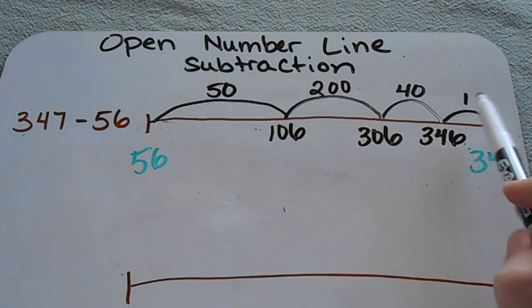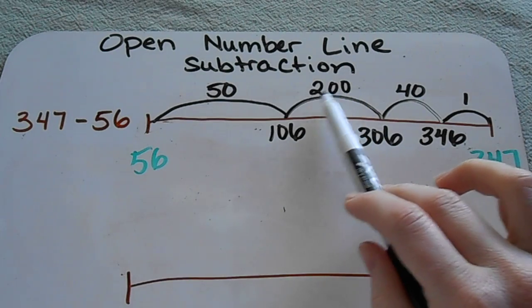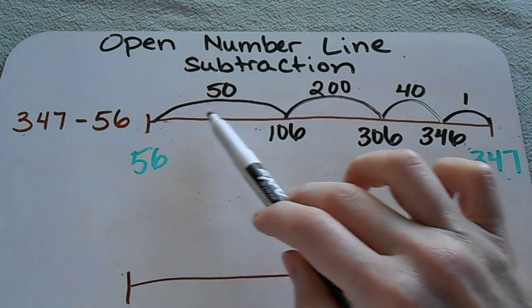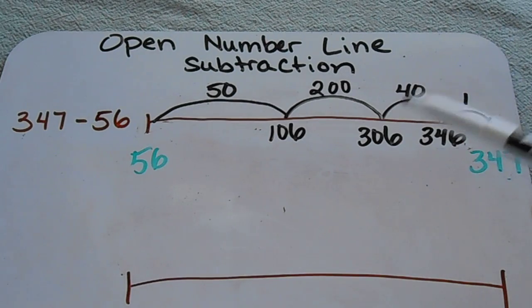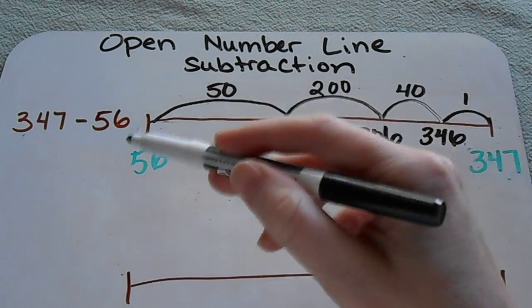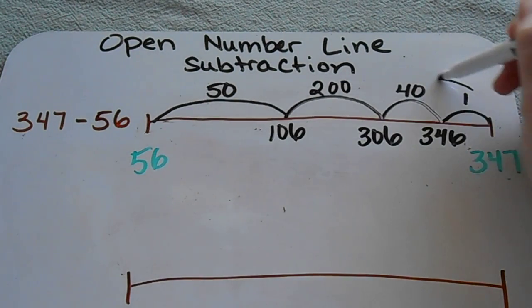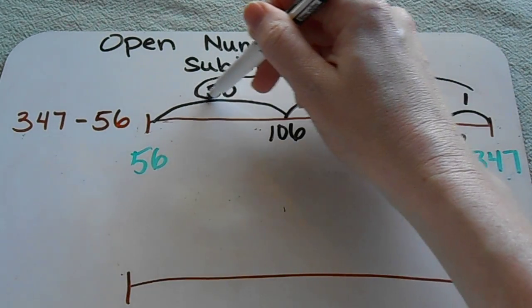And as you can see, my jumps are not evenly spaced out. Obviously 200 is worth a lot more than 50, but that's okay. You just want to get the visual of jumping down the number line and recording how many jumps you make.